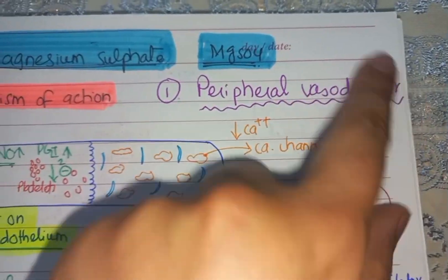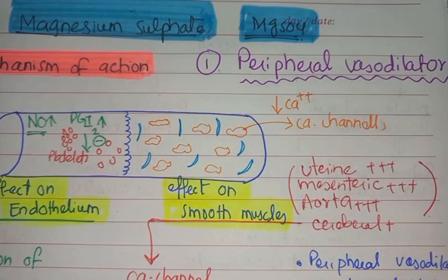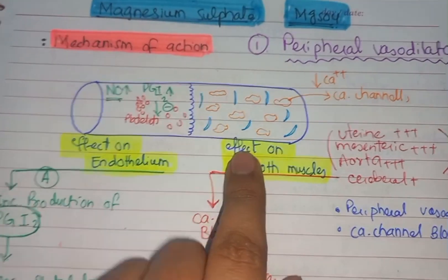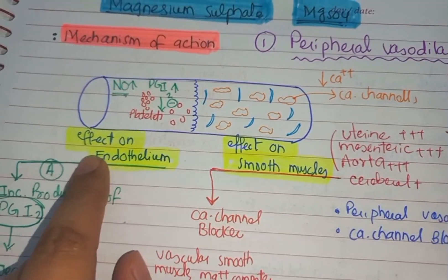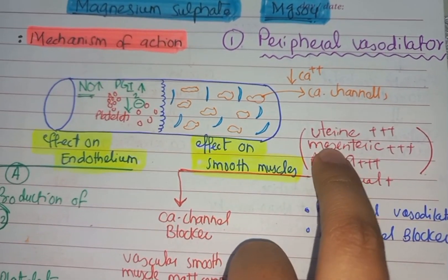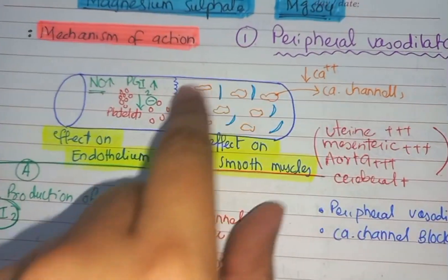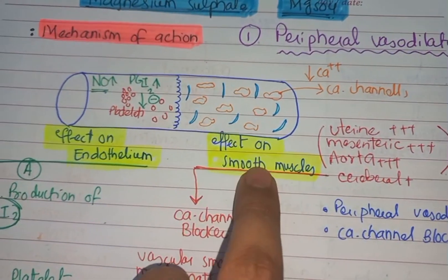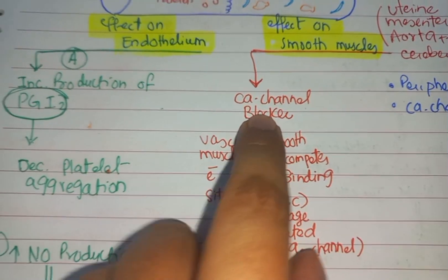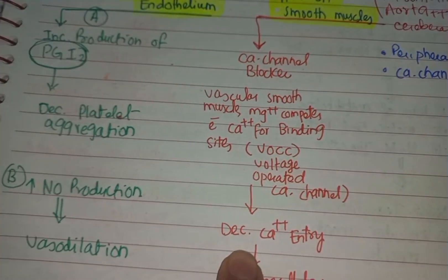The first action is peripheral vasodilatation. Peripheral vasodilatation is performed through its property as a calcium channel blocker. Magnesium has an effect on smooth muscles as well as on the endothelium. It affects uterine smooth muscles, mesenteric smooth muscles, aorta, and cerebral smooth muscles. By affecting the smooth muscles, it acts as a calcium channel blocker, which decreases the entry of calcium into the cells.